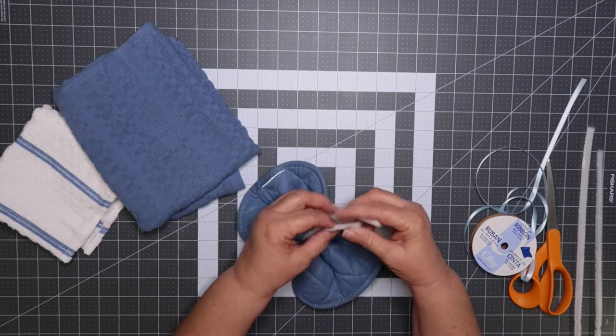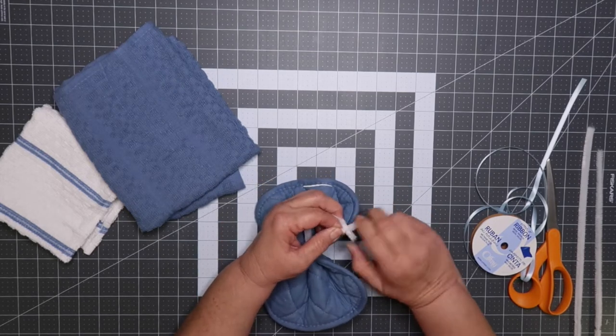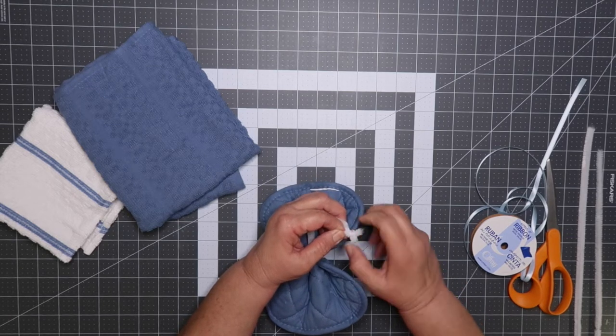Once secured, twist at the ends of the chenille stem and that forms the hanger.